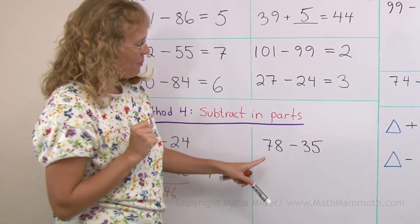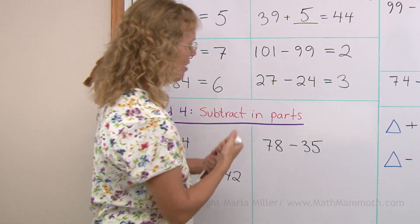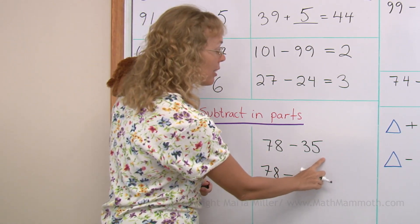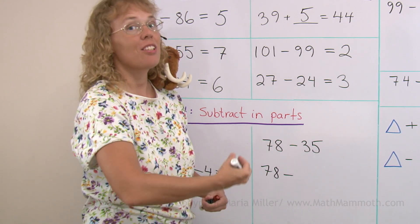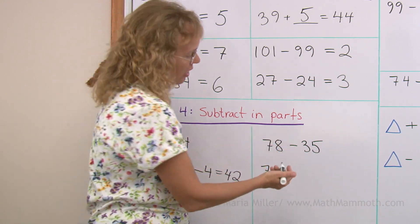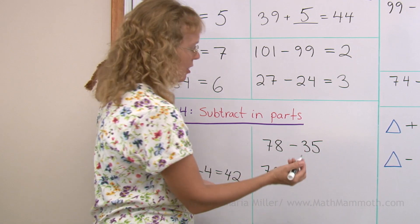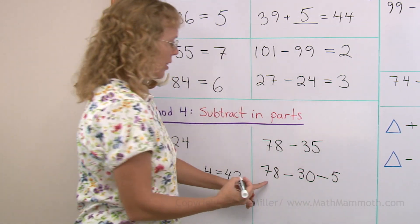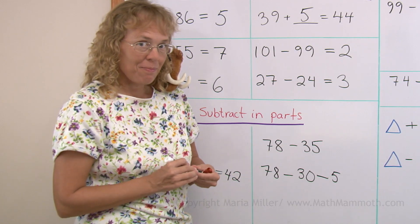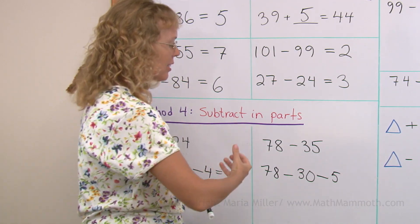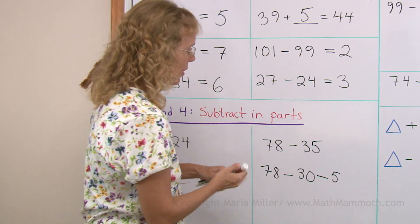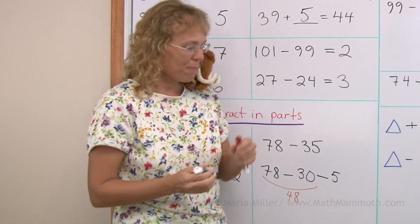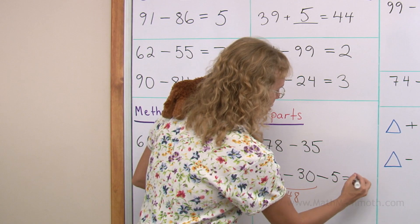Let's do it again. 78 minus 35, 78 minus. And then you subtract this in two parts. First 30, then 5. Or maybe first 5 and then 30. Whichever way you prefer. 78 minus 30. That's easy. It is 48, right? This here is 48. And then 48 minus 5 leaves you with 43.